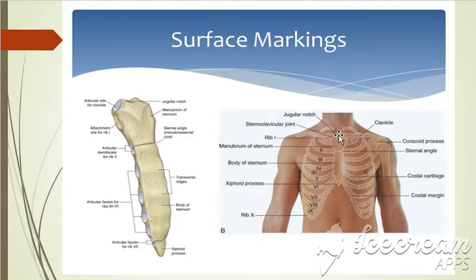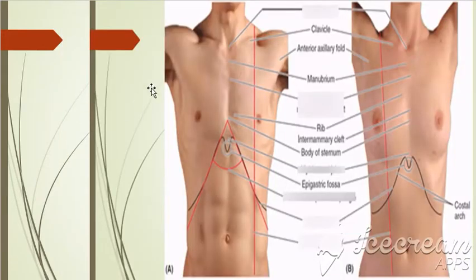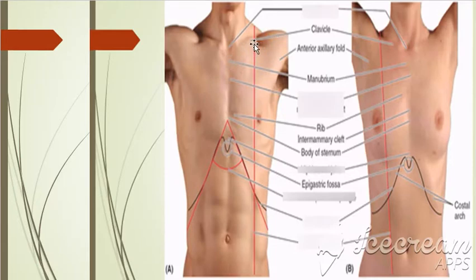Then comes the mid-clavicular line. Take a point on the mid-clavicle, then draw a vertical line down to the mid-groin. This line gives you the mid-clavicular line.